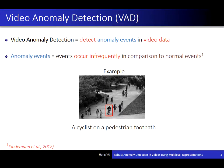The problem we address in this work is video anomaly detection, where we would like to detect anomaly events in video data. Anomaly events are defined as events that occur frequently in comparison to normal events. An example is shown in the figure below. In this scene, we have a lot of pedestrians moving on the footpath, and any other objects that illegally move on this footpath can be considered as anomaly objects, and the purpose of the system is to detect that kind of object.